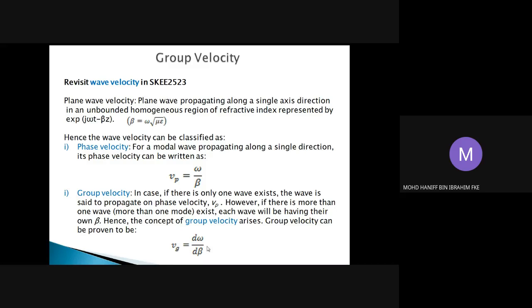The group velocity is defined as the differentiation dω/dβ. Phase velocity is for a single wave propagation; group velocity is when we consider more than one wave propagation. In a multimode structure with many modes or rays of light, there are many waves and each has its own β or propagation constant, and each wave can be defined by its own group velocity.